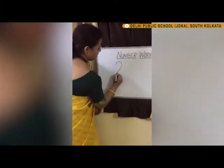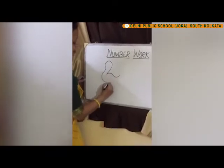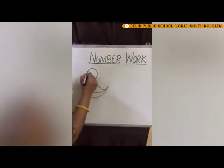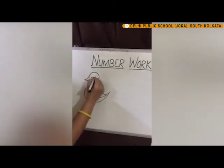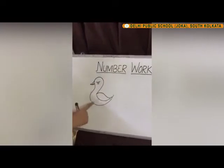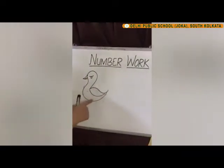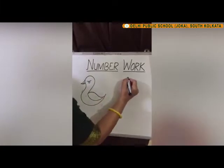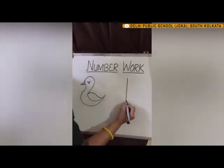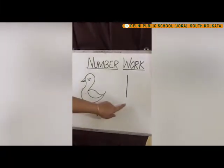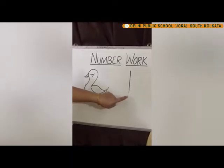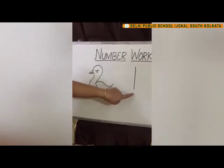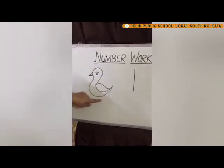So tell me what is this? Yes, this is a duck. How many ducks are there? One duck. So I am writing here number one. Which number is this? This is number one. And here how many ducks are there? There is one duck.